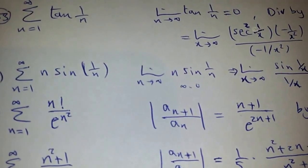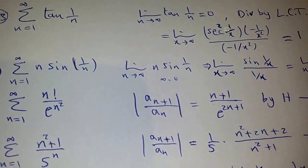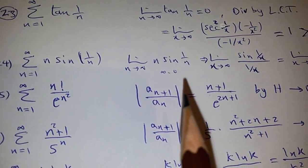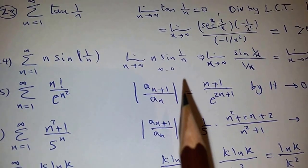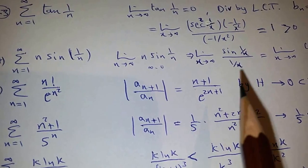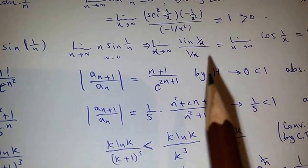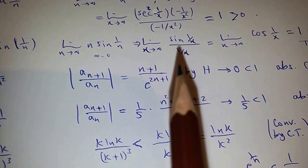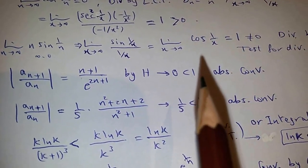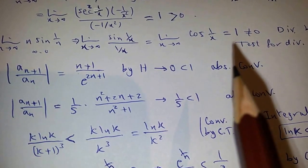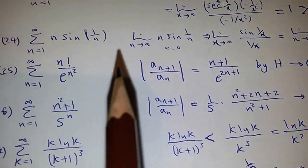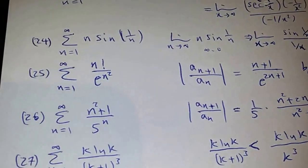Another one: N·sin(1/N). If you try to find the limit, it would be infinity times 0 — use functions, bring X down, write it as sin(X)/(1/X). Now it is sin(0)/0, so 0/0. Use L'Hôpital's rule. You will find it equals 1, which is not 0. So it is divergent by the test for divergence.